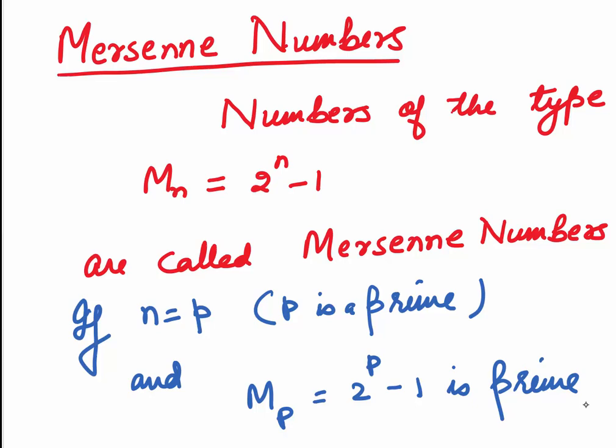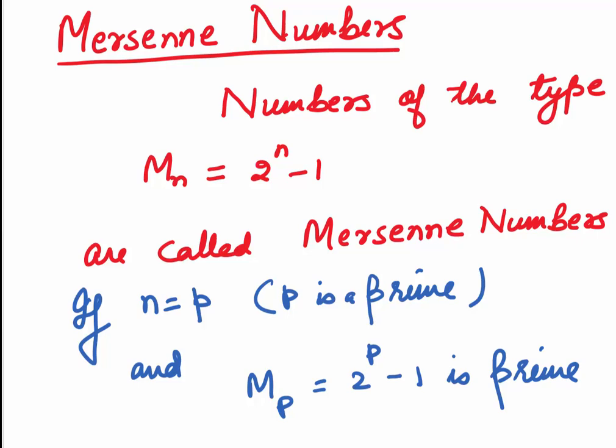Numbers of the type Mn = 2^n - 1 are called Mersenne Numbers. If n is a prime number, say p, and Mp which is 2^p - 1 is a prime, then such primes are known as Mersenne Primes.